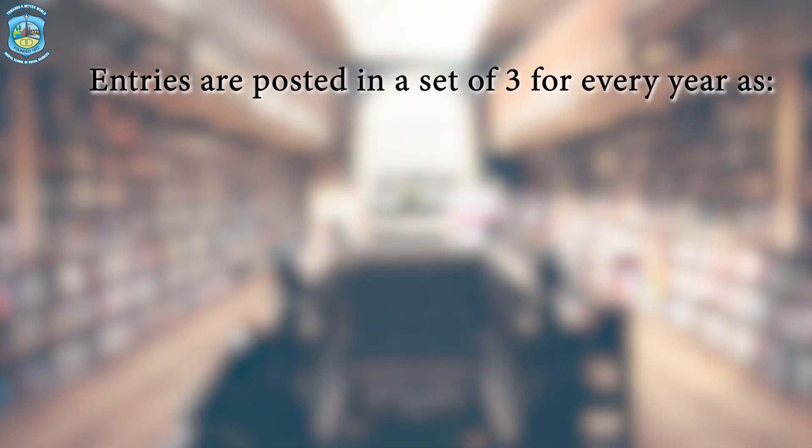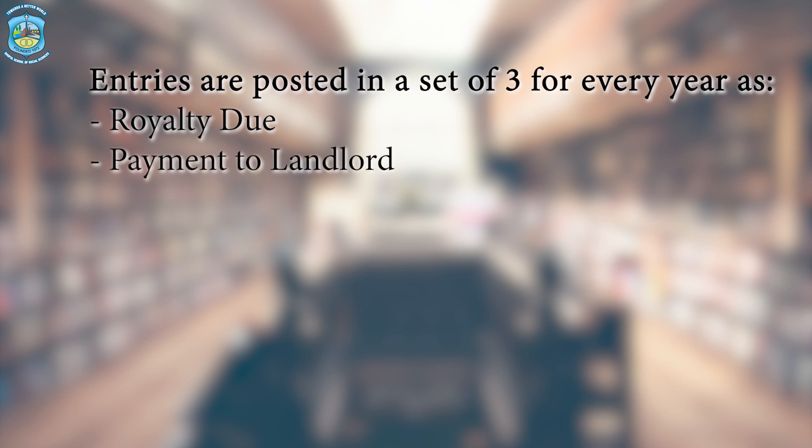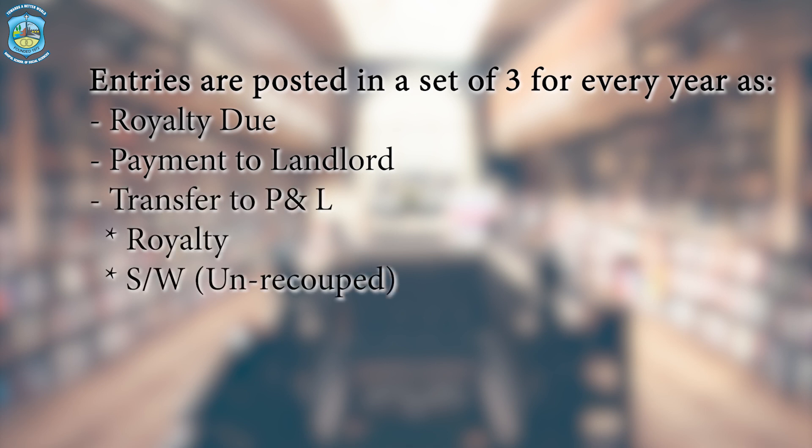Now let's move to step two: processing accounting entries for royalty. Whenever royalty is paid, there is a set of three entries posted. If royalty is posted annually, these three entries are posted annually; if half-yearly, the three entries are posted twice per year. The three entries that make one set are: first, royalty amount due; second, payment made to the landlord; and third, a transfer entry to P&L.